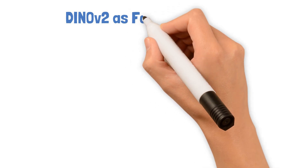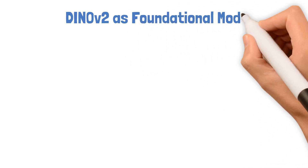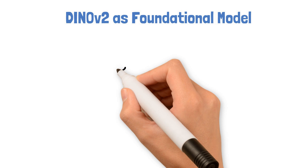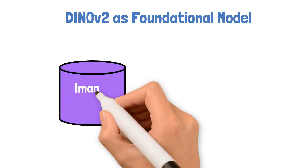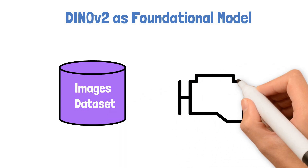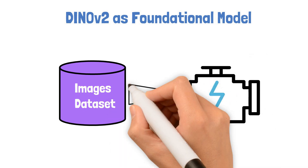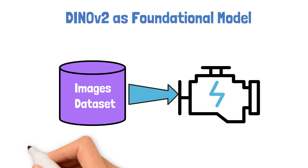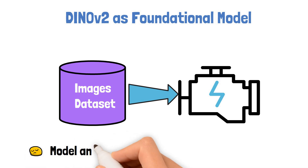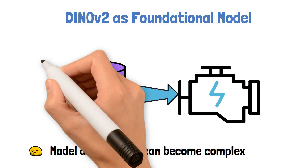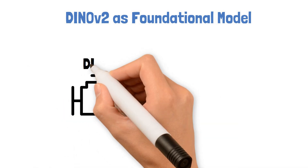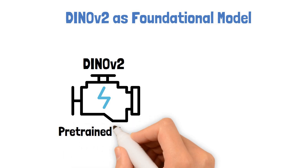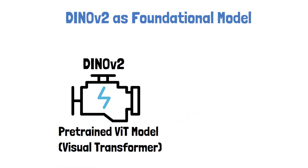Let's start by understanding what DynoV2 means as a foundational model in computer vision. In the life before a foundational model, one would need to find or create a dataset, choose some architecture for a model, and train the model on that dataset. The model you need may be complex and may require a long or hard training. So here comes DynoV2, a pre-trained huge visual transformer model, which is a well-known architecture in computer vision, saying that you may not need a robust, complex, dedicated model.